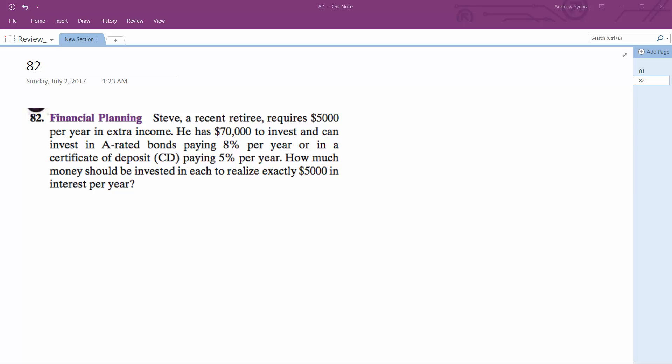So I'll do it this way. We'll do X plus Y equals $70,000, and 0.08X plus 0.05Y equals $5,000.